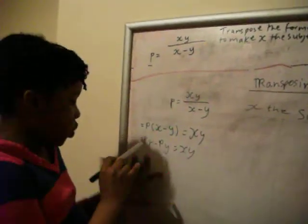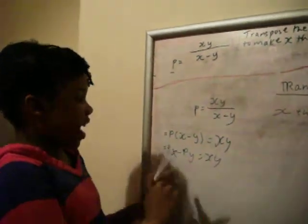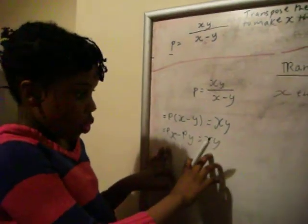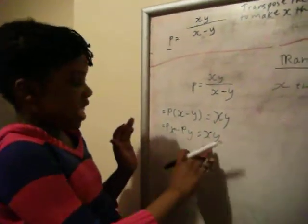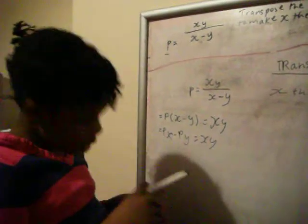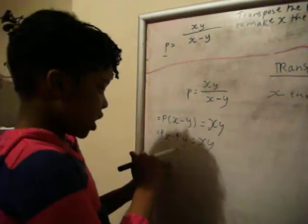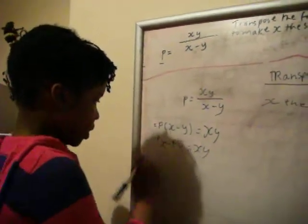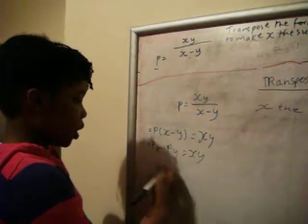So what I'm going to basically try and do is get the xy and px together. So I'm going to move this and then move it. You can move it together but you need to move it.